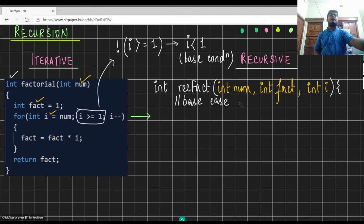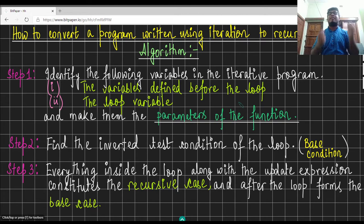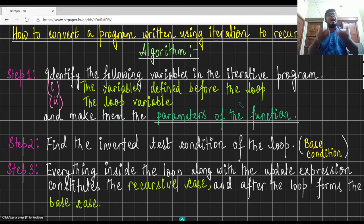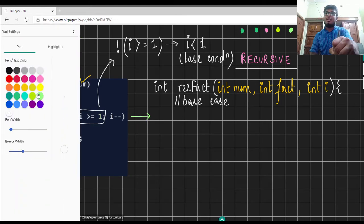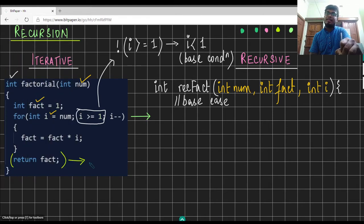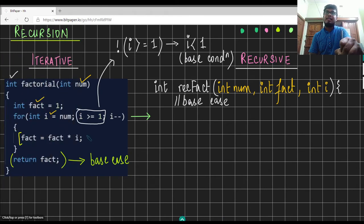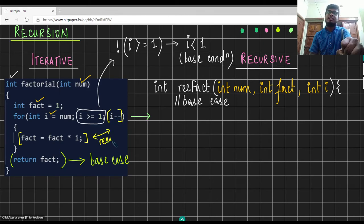In step 3, everything inside the loop along with the update expression forms the part of the recursive case, whereas everything after the loop forms our base case. Because we need to write the base case first, return fact forms the base case. Whereas the body of the loop and the update expression form the recursive case.